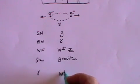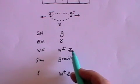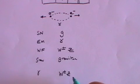By contrast, the W plus minus and the Z bosons are extremely heavy. Eighty times bigger than a proton. So they have a very, very short range indeed.